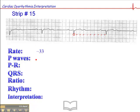So heart rate's about 33 beats per minute, that's pretty accurate. P waves are definitely present and upright. The PR interval is 0.28 seconds. It's prolonged.